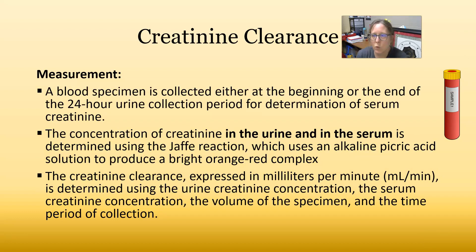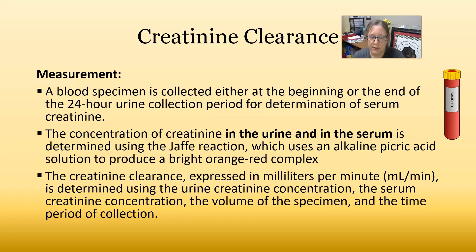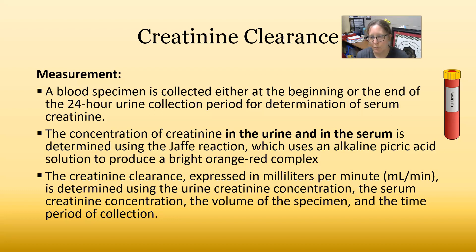A blood specimen is collected either at the beginning or end of the 24-hour urine collection period to determine the serum creatinine. The concentration of creatinine in both the urine and serum is determined using the Jaffe reaction, which uses an alkaline picrate solution to produce a bright orange-red complex. The creatinine clearance is expressed in milliliters per minute and is determined using the urine creatinine concentration, serum creatinine concentration, volume of the specimen, and the time period of collection.